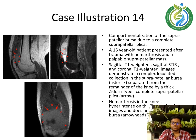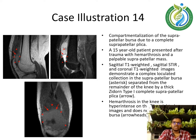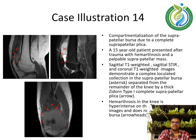Case illustration 14: compartmentalization of the suprapatellar bursa due to a complete suprapatellar plicae. A 15-year-old male patient presented after trauma with hemarthrosis and palpable suprapatellar mass. Sagittal T1-weighted, sagittal STIR, and coronal T1-weighted images demonstrate a complex loculated collection in the suprapatellar bursa, separated from the remainder of the knee by a thick Zidane type 1 complete suprapatellar plicae. Hemarthrosis in the knee is hyperintense on T1-weighted images and does not involve the bursa.